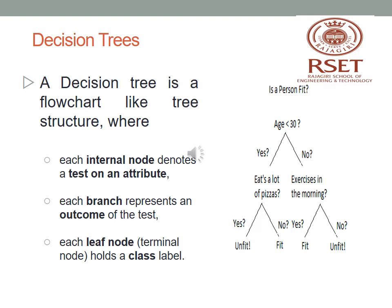Our root node considered here is age less than 30. If age is less than 30, we furthermore check whether that person eats a lot of pizza. If yes, the label is unfit. If age less than 30 is no, we need to check one more feature: does the person exercise in the morning? If yes, the person is fit; if no, the person is unfit. So the different class labels are unfit, fit, fit, and unfit. The leaf nodes represent the class labels fit and unfit, and each branch represents the outcome of the test.